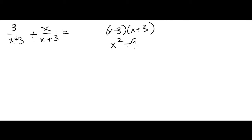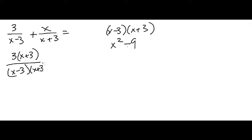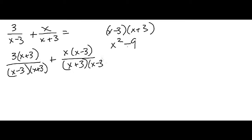So the way I like to do this is I just see that this left-hand term over here is missing an x plus 3 term, so I multiply the numerator and the denominator by x plus 3. Over here I noticed that the denominator is missing an x minus 3 term, so I multiply the numerator and the denominator by x minus 3.